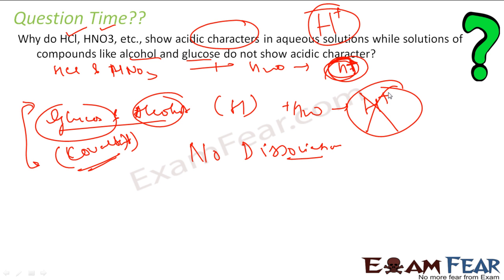So even though they have H hydrogen, they don't give H+ ion. Since they don't have H+ ions, they are not acidic in nature. So anything for it to be acidic, it should have H+ ion. Please note, we are not talking about H, we are talking about H+. So when water is added to nitric acid or hydrochloric acid, it gives H+ ions, but when water is added to glucose or alcohol, it does not give H+ ions.